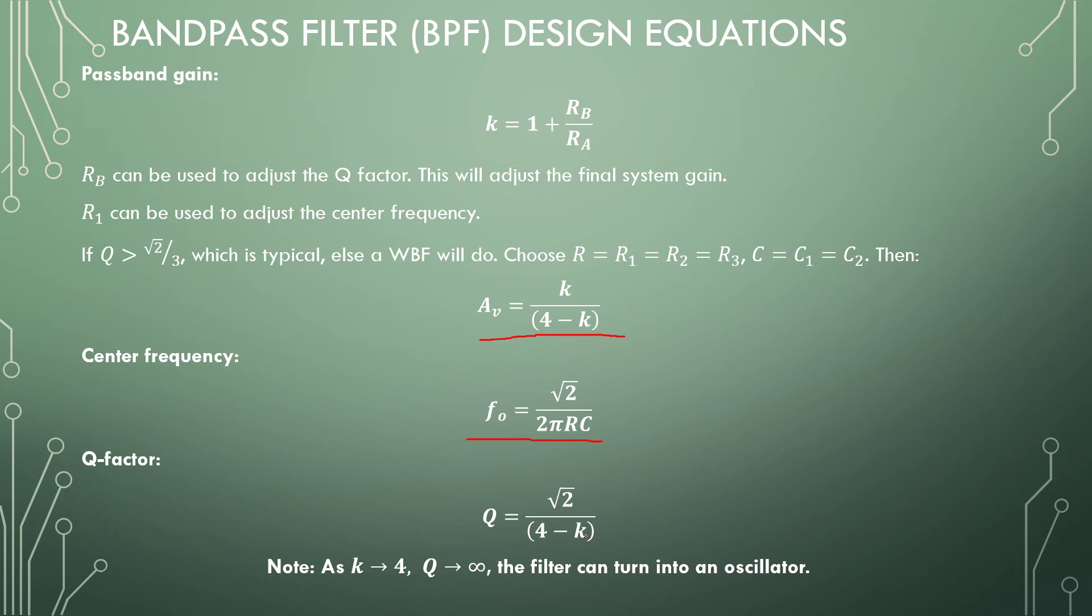Now note, if K moves towards 4, your Q-factor will become infinite, and at the infinite Q, this filter will turn into an oscillator. I will do a later video on how to turn one of these into an oscillator.